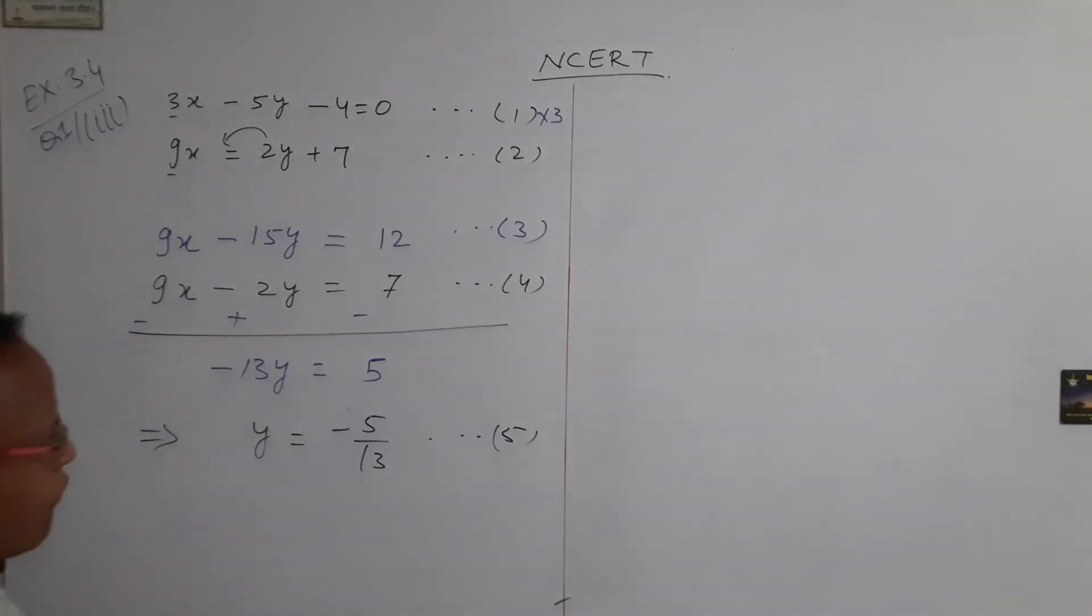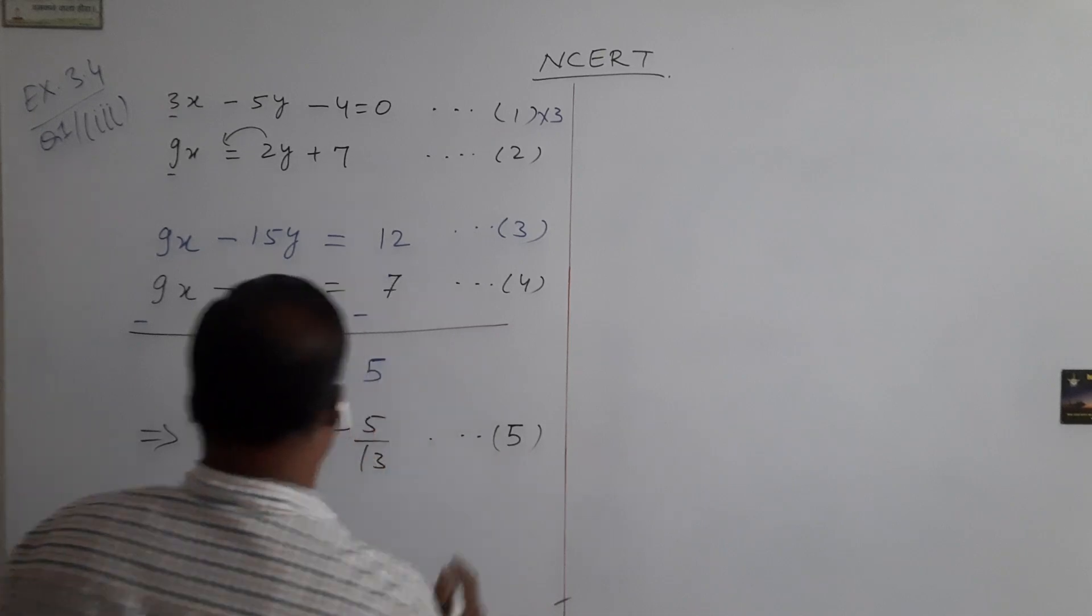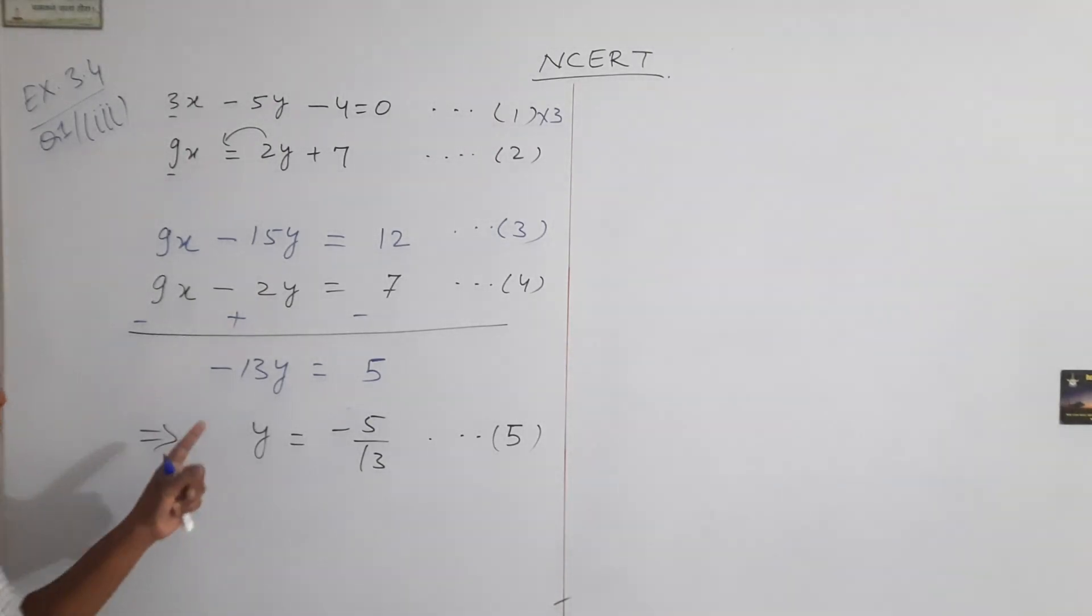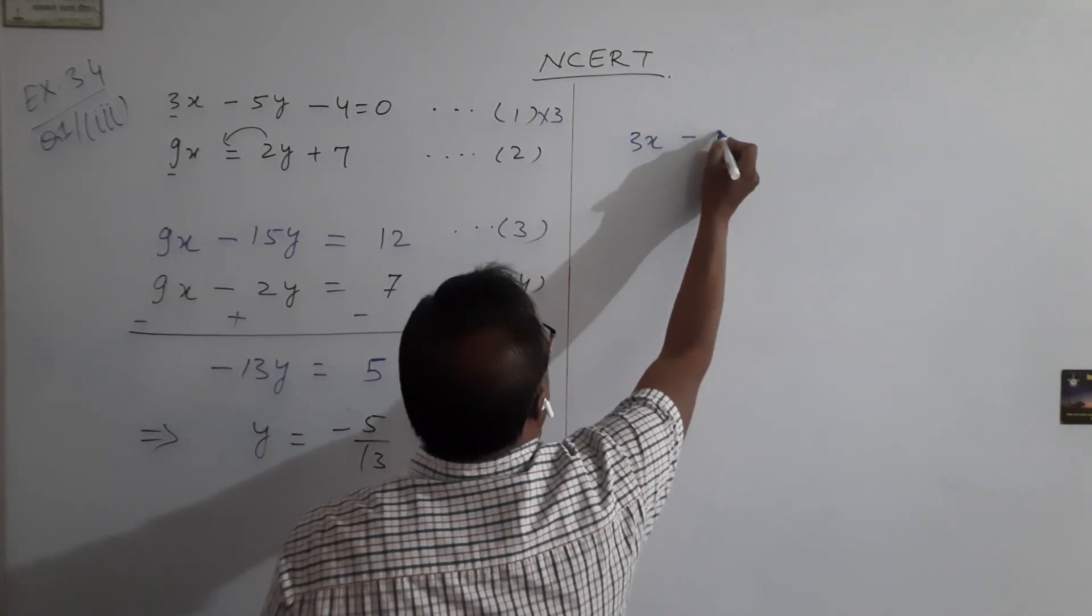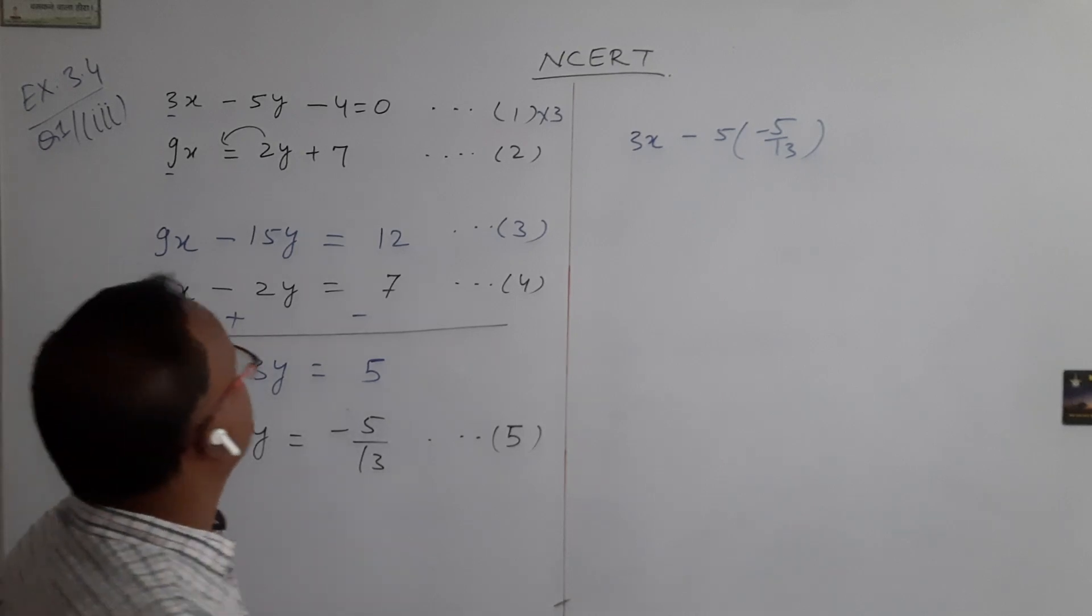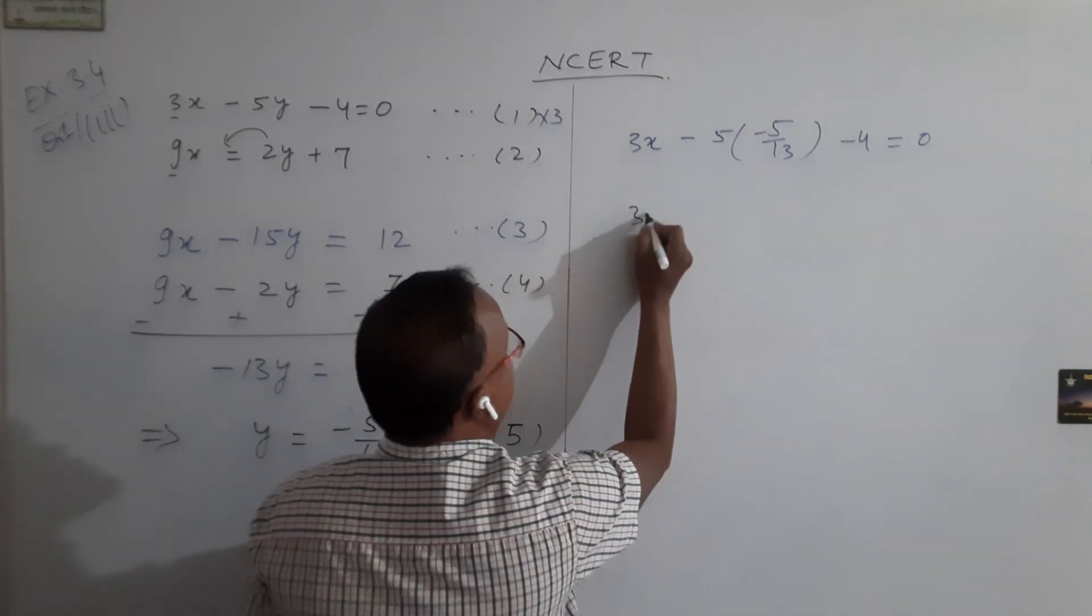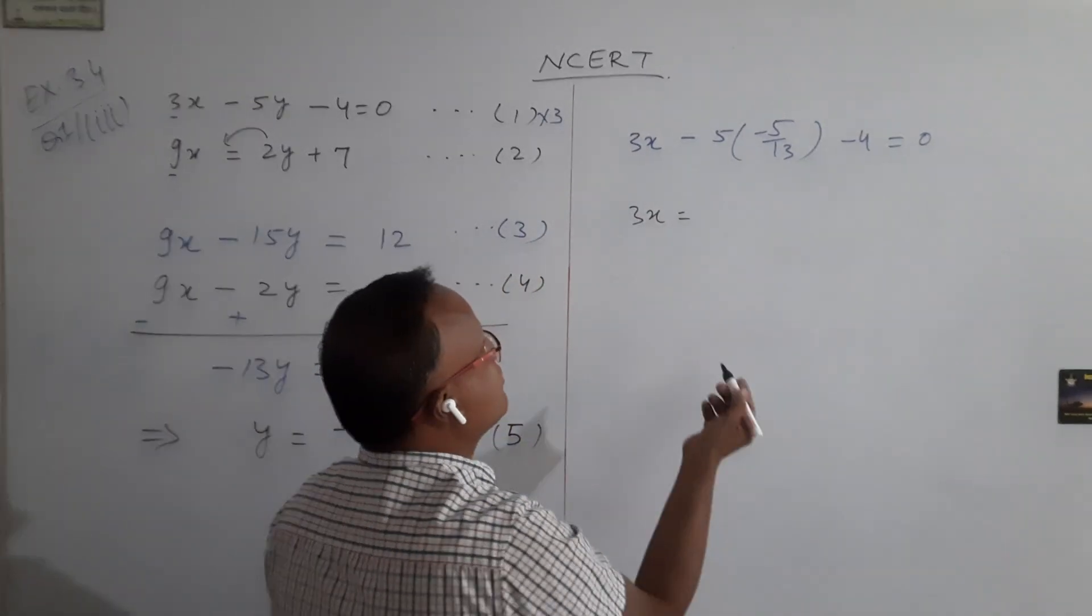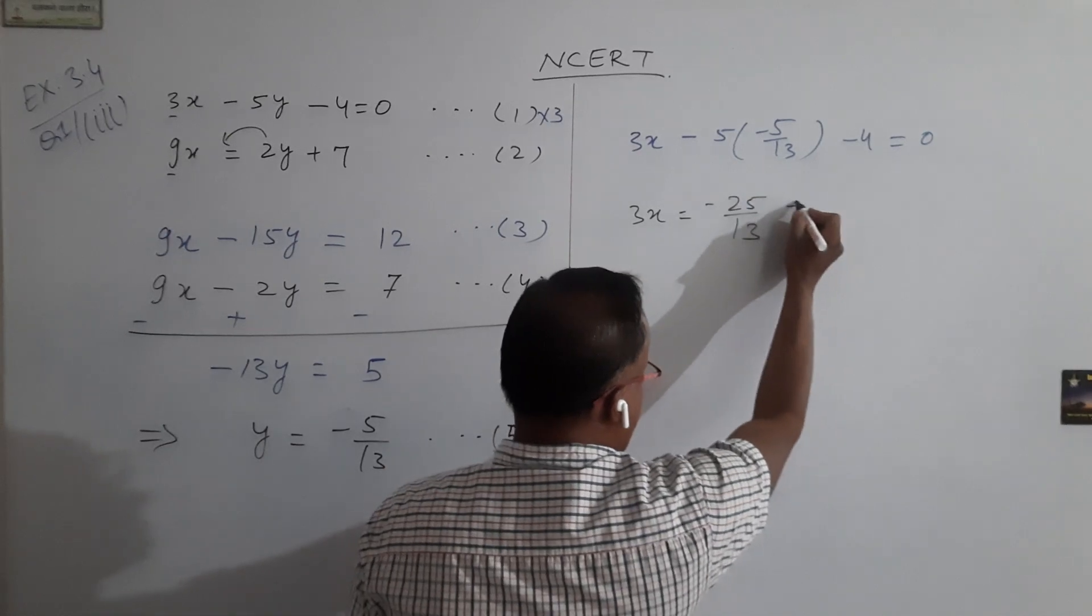So this value of y we put in equation number 1 to find out the value of x. Putting y equal to minus 5 by 13 in equation 1, we get 3x minus 5y, which is minus 5 by 13, minus 4 equal to 0. Taking on the right hand side, 3x is equal to, this minus minus is plus, taking on the right hand side it becomes minus. So minus 25 by 13 and this minus becomes plus 4.